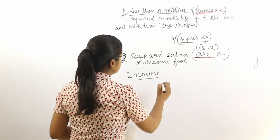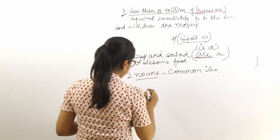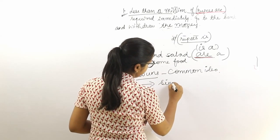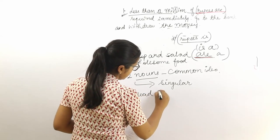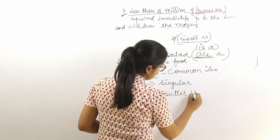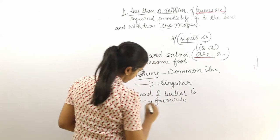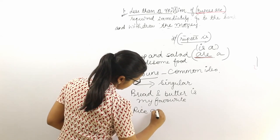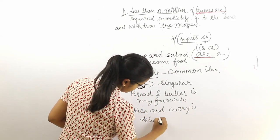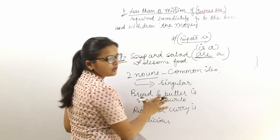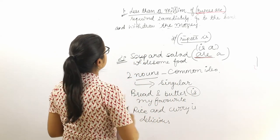The reason is that when two nouns are used as a common idea, the verb they take is always singular. For example: 'Bread and butter is my favorite.' And: 'Rice and curry is delicious.' So if two words represent a common thing or common idea, we use a singular verb.